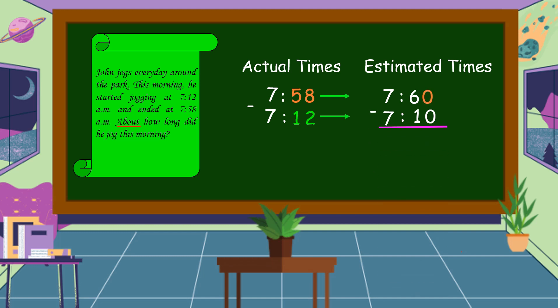Then let's subtract. 60 minus 10 is equal to 50. 7 minus 7 is equal to 0. So, the estimated time is 50 minutes.